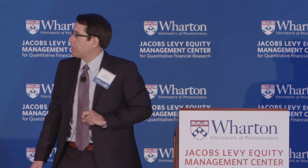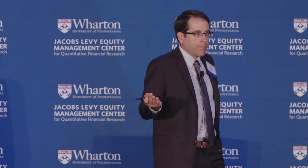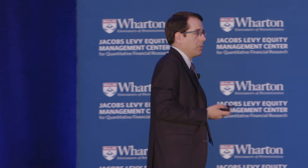Let me give a specific example: Gulfmark Offshore. In 2004, if you wanted to form this asset growth portfolio, the earnings announcement was February 26th, and there was no information about balance sheet variables in that announcement—you would have had to wait until the 10K came out on March 15th. However, in 2018, the earnings announcement press release on March 29th actually contained basically the full detailed financial statements, so all the information in the 10K on April 2nd was already known and stale. Snapshot allows us to pinpoint precisely when this information first became available for trading.